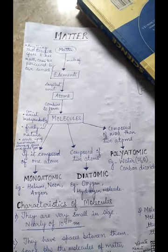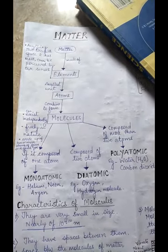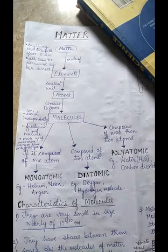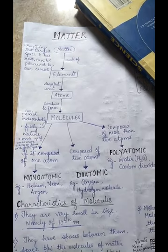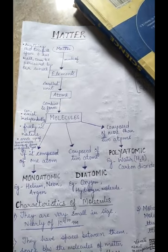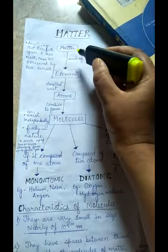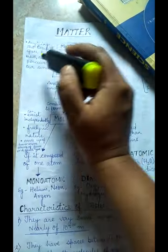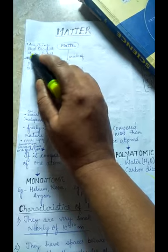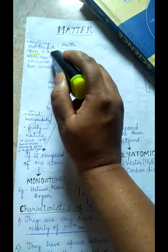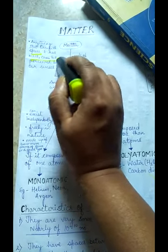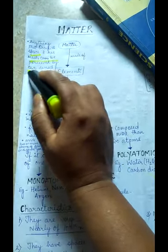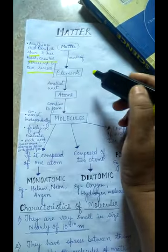Hello students, let's start with Chapter 1: Matter, Class 8 Physics. So, what is matter? Matter is anything that occupies space and has mass, which can be perceived by our senses.